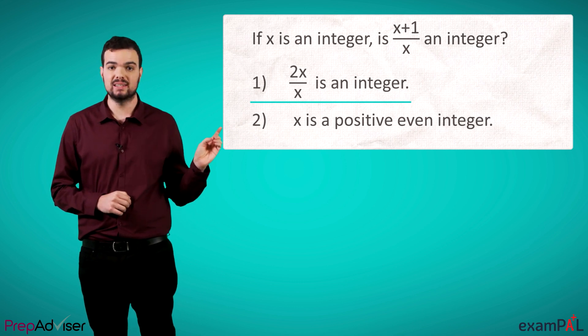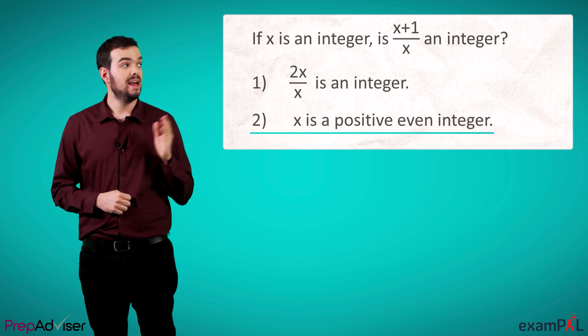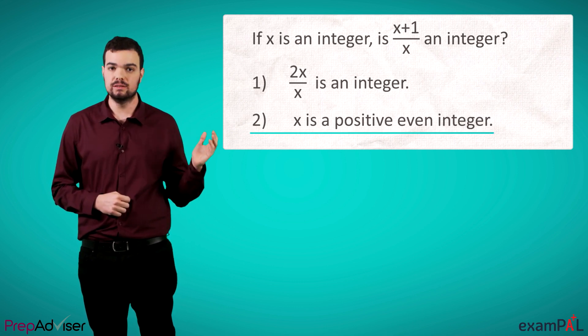2/x is an integer. And statement two gives a different piece. X is a positive, even integer.